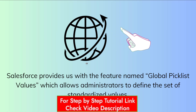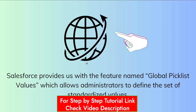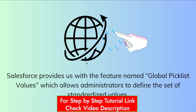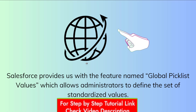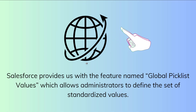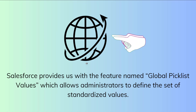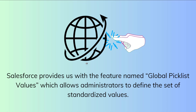For example, if you have values like names of continents and you need them in multiple picklists, you are not going to create those picklist values again and again. Instead, you create a global picklist value set once and use it across different picklist fields or multi-select picklist fields.